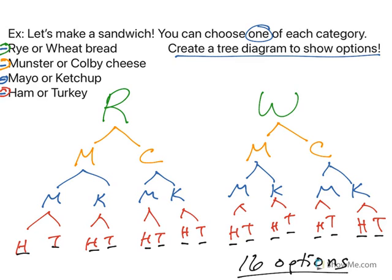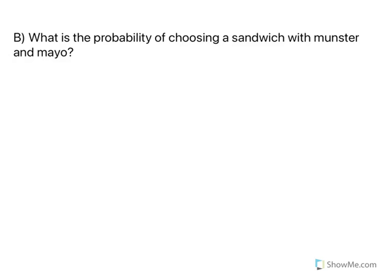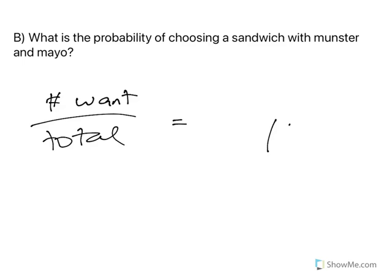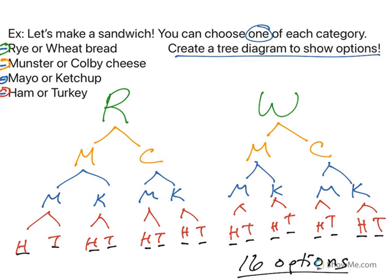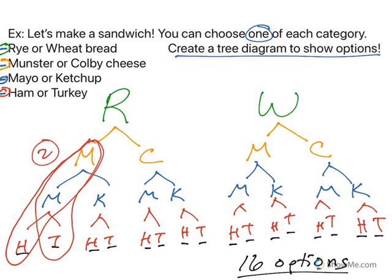Now we can use this tree diagram to answer a probability question. What is the probability of choosing a sandwich with Munster and mayo? Now, remember that probability is the number of what we want over the total options. Now we know there are 16 total options. So how many sandwiches have Munster and mayo? So let's come back. Munster and mayo could be here. Munster mayo could be turkey. So that's two right here. And then Munster, mayo, ham here, Munster, mayo here. So there's two here. So there are four sandwiches that have Munster and mayo, right?